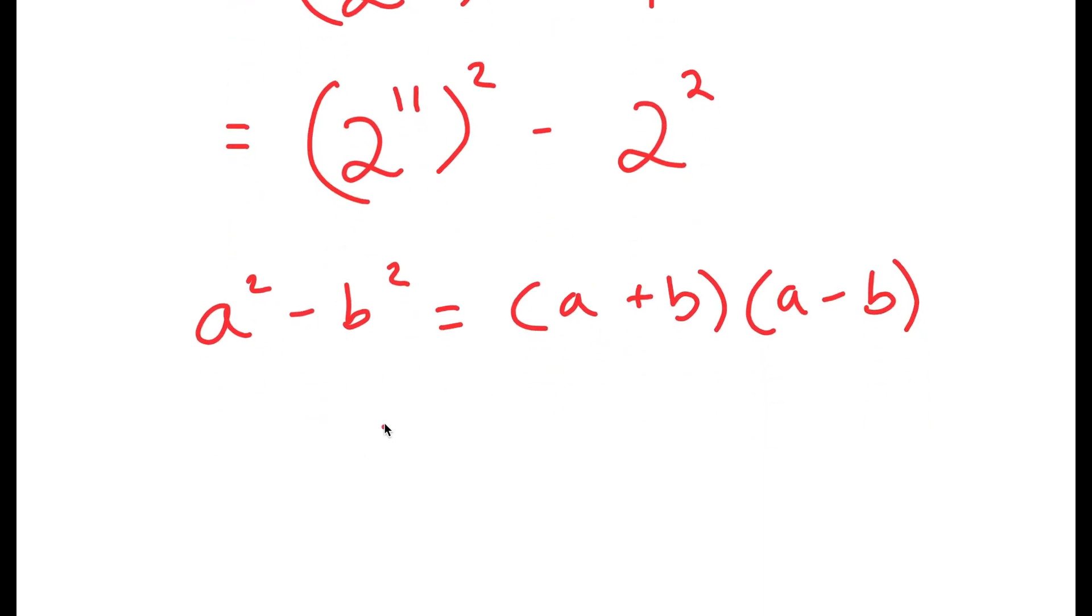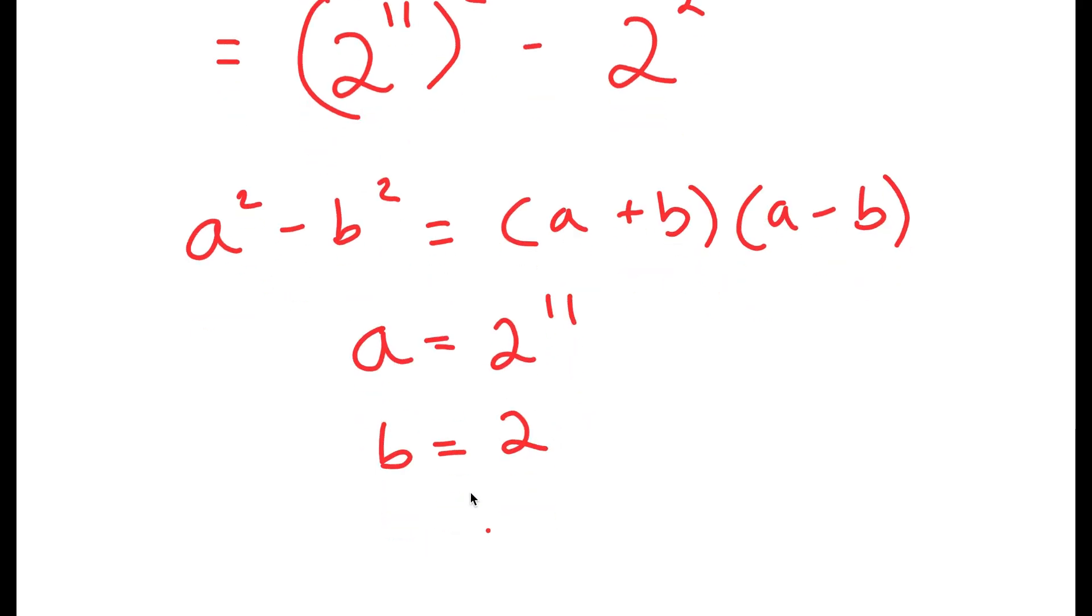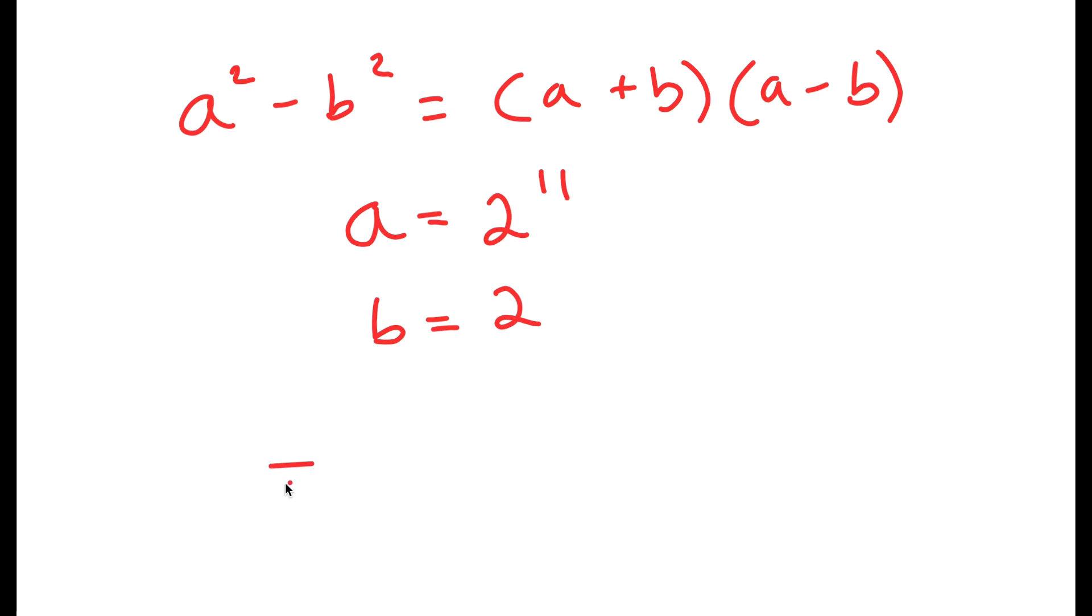So in this case, I can think of a as 2 to the power of 11 and b as 2. So this turns to 2 to the power of 11 plus 2 times 2 to the power of 11 minus 2.